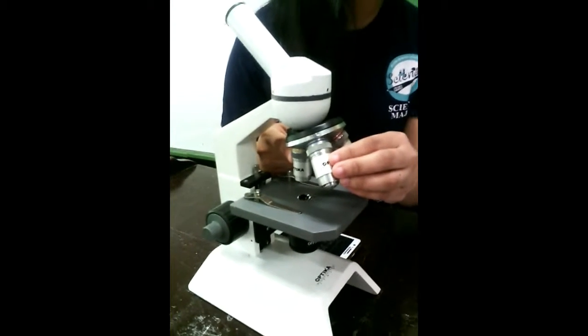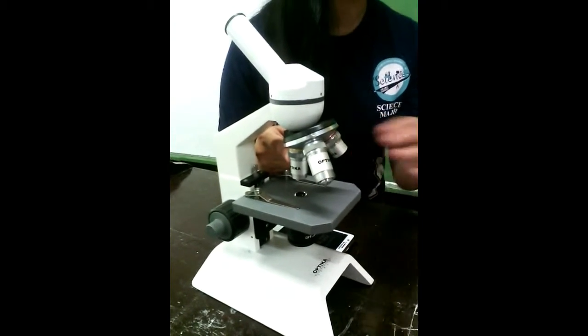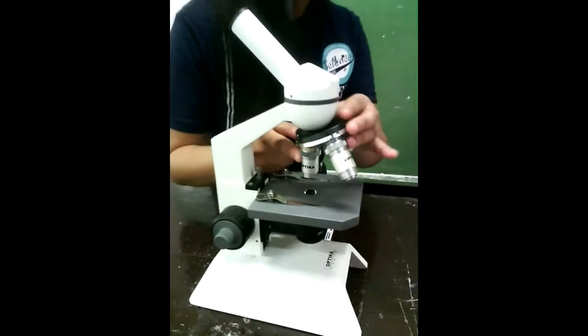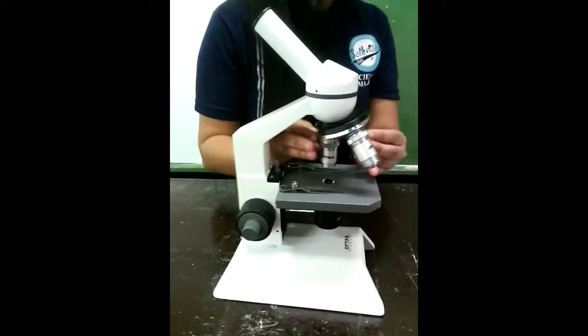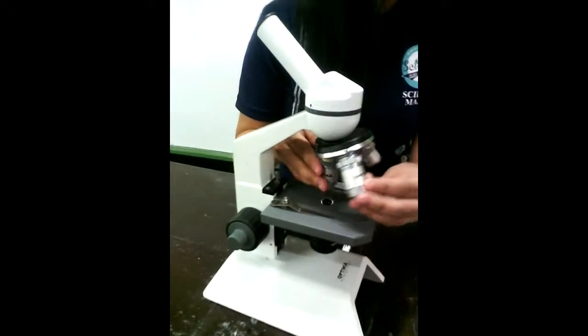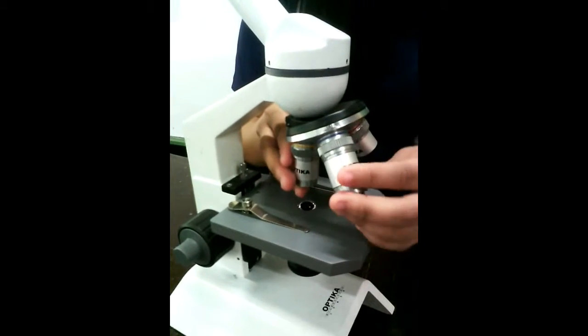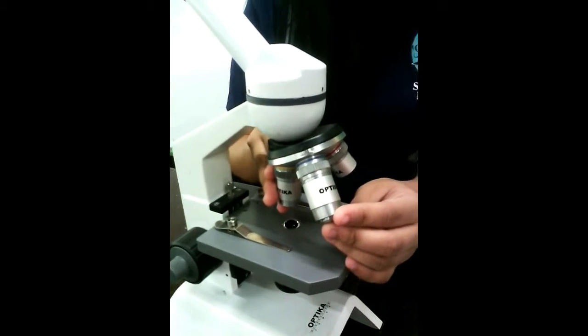The magnification achieved by each objective lens is indicated on the side. Common values are 10 times for the low power, 40 times for the high power, and 100 times for the oil-immersion objective.